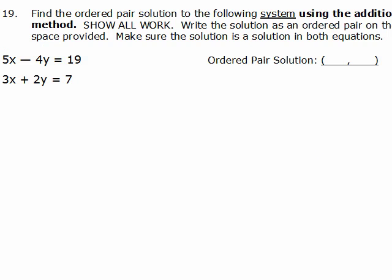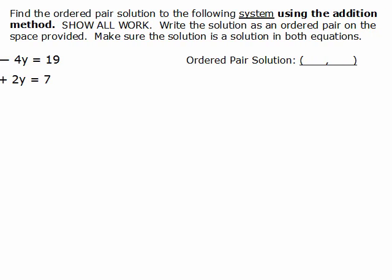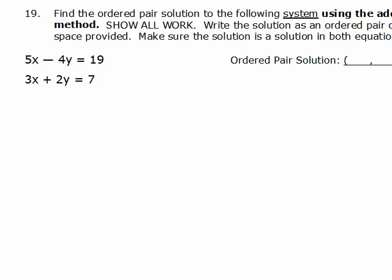Alright, here's another system where we're going to use the addition method. So we need to get either the Y's or the X's to cancel out here. So I'm going to move over a little bit. Here we go, and I really just want to look at either the X values or Y values and I want to see if I can get the least common denominator for the coefficients and opposite signs. So I've got a negative 4 and a 2, the least common denominator is 4. If I multiply the bottom equation by 2, I'll get a plus 4Y and that'll do it.